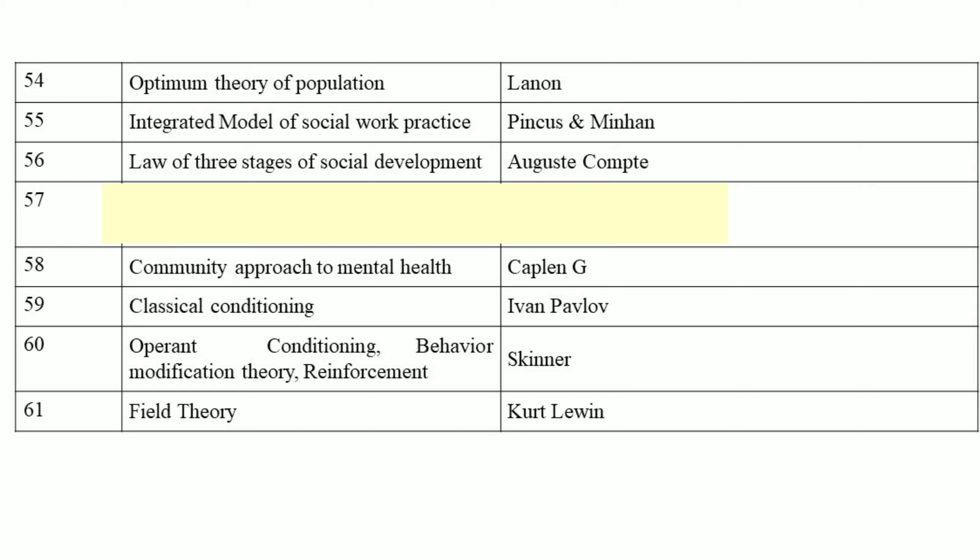Integrated model of social work practice by Pincus and Minahan. Law of three stages of social development, which was developed by Auguste Comte. Community approach to mental health by Caplan. Classical conditioning by Ivan Pavlov. Operant conditioning, behavior modification theory, and reinforcement — all put forward by B.F. Skinner.